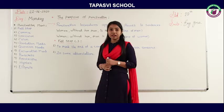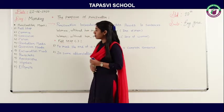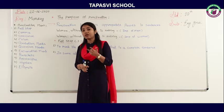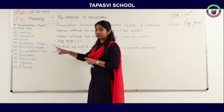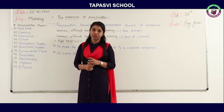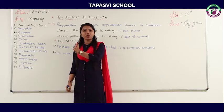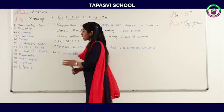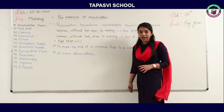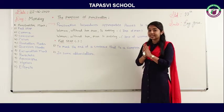In our 10th standard syllabus, the punctuation marks are: full stop, comma, semicolon, colon, quotation marks — which includes single inverted commas and double inverted commas — question mark, exclamation mark, brackets, apostrophe, hyphen, and ellipses. Some of these are very common and we have been learning them since the early standards. A few we will need to learn in a new way now.